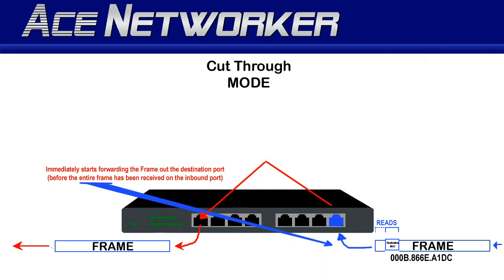In other words, as soon as the switch reads the destination MAC address in the incoming frame, it will still be receiving bits while looking up the CAM table and forwarding to the correct destination port. This type of switching is very fast — a frame starts getting forwarded almost as soon as it arrives on the inbound interface. However, there is a significant disadvantage to this forwarding mode.